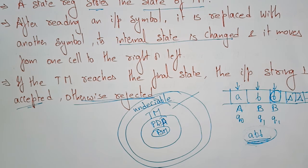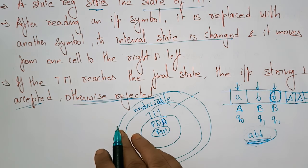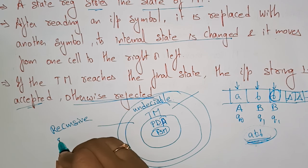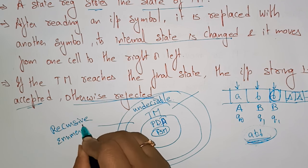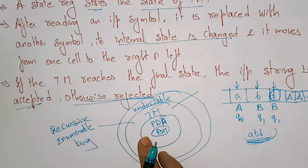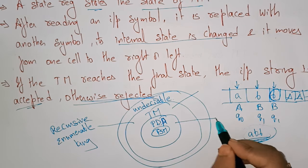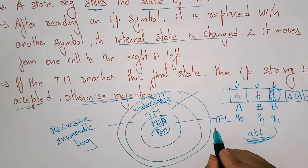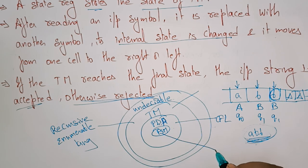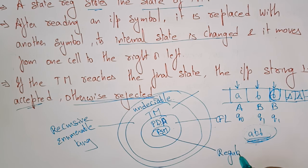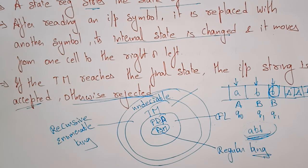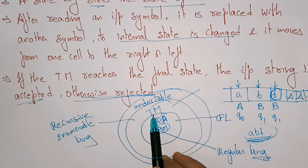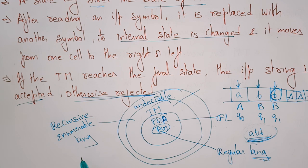For the Turing Machine, we are using the recursive enumerable language. In the pushdown automata, we use the context-free language. In the finite state machine, we use the regular language. So remember this: finite state machine uses regular language, pushdown automata uses context-free language, and the Turing Machine uses the recursive enumerable language.